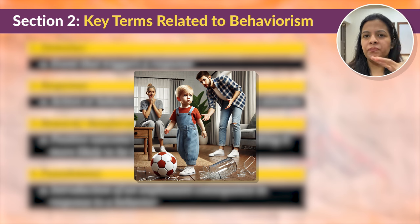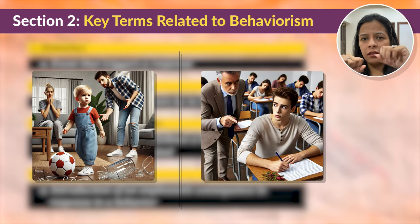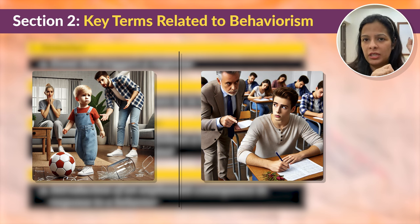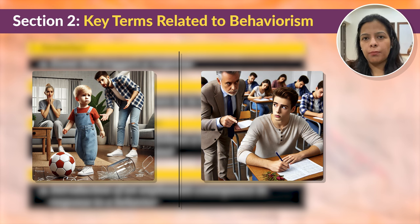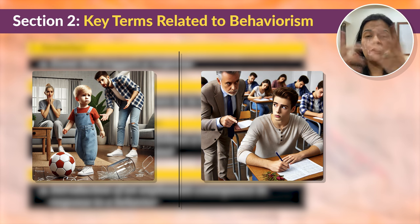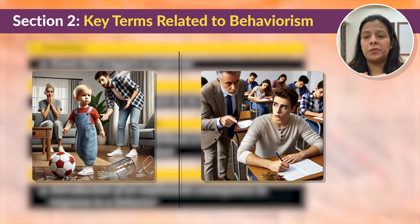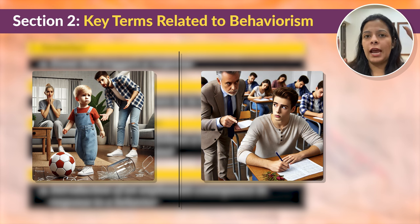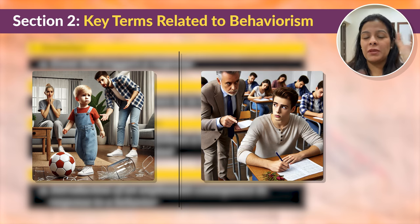Let me give you another example in a school setting. A student is caught cheating during an exam — that is the behavior. As a consequence, the student is given detention and is not allowed to participate in the school trip he was very excited about. This negative experience teaches the student to avoid cheating in the future to prevent further punishment. This is how he understands and links that a certain behavior leads to punishment, so he should not repeat that behavior.